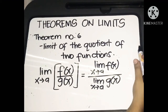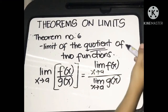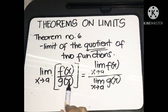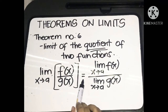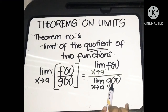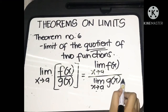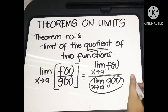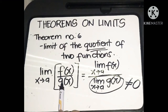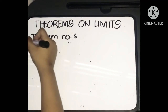Let's now have Theorem 6: the limit of the quotient of two functions. This is written as the limit of f(x) over g(x) as x approaches a, equal to the limit of f(x) as x approaches a divided by the limit of g(x) as x approaches a, provided the limit of g(x) is not equal to 0. We just distribute the limit over the division operation. Let's have the first example.